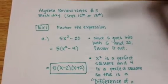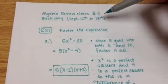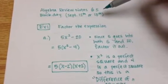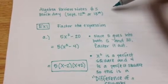Hi, Advanced Algebra 2B. These are your Algebra Review Note number 5 for block day, which is either going to be September 12th or 13th, depending on what day you have class.